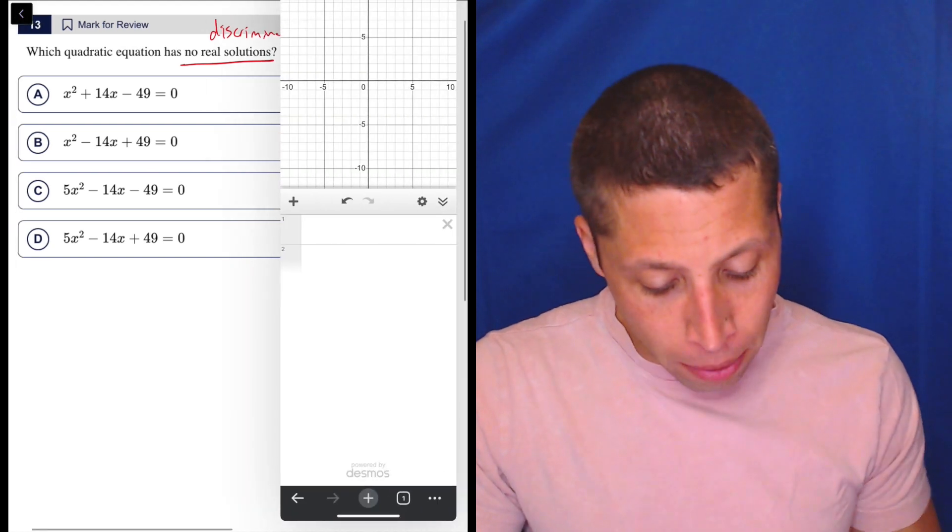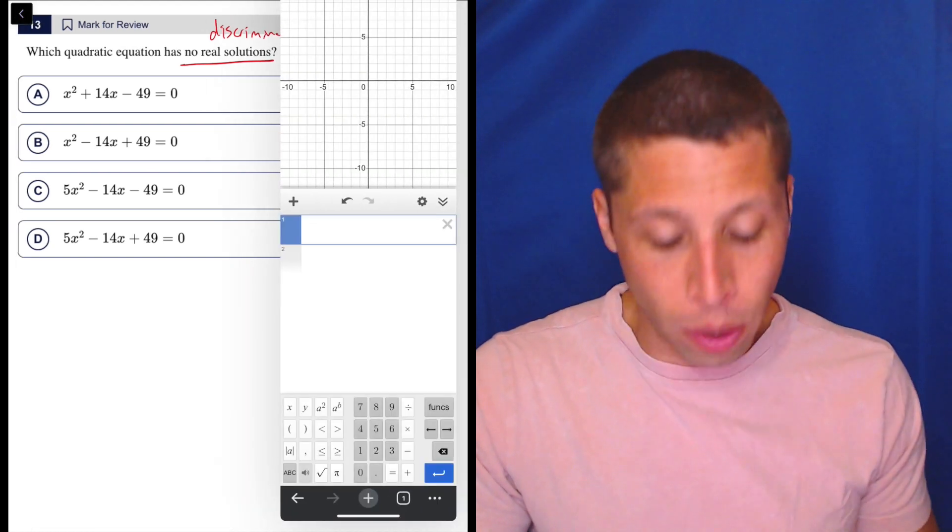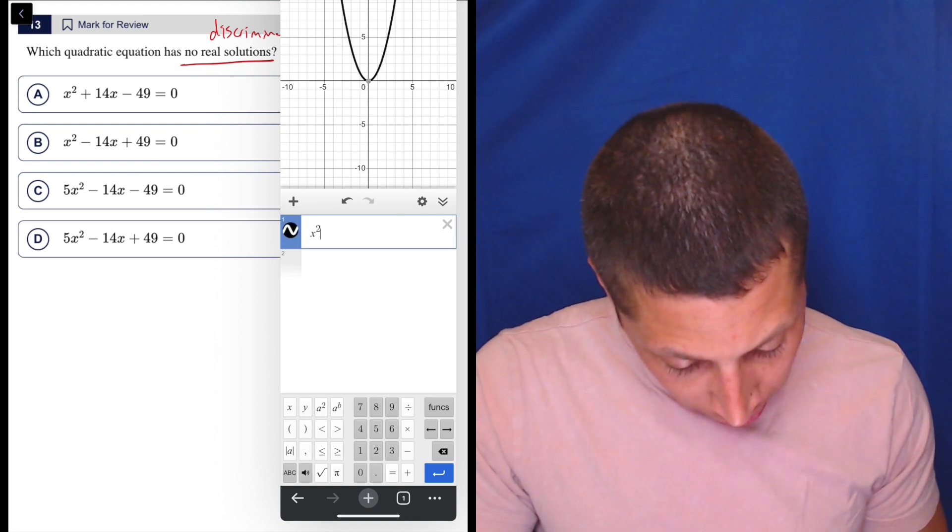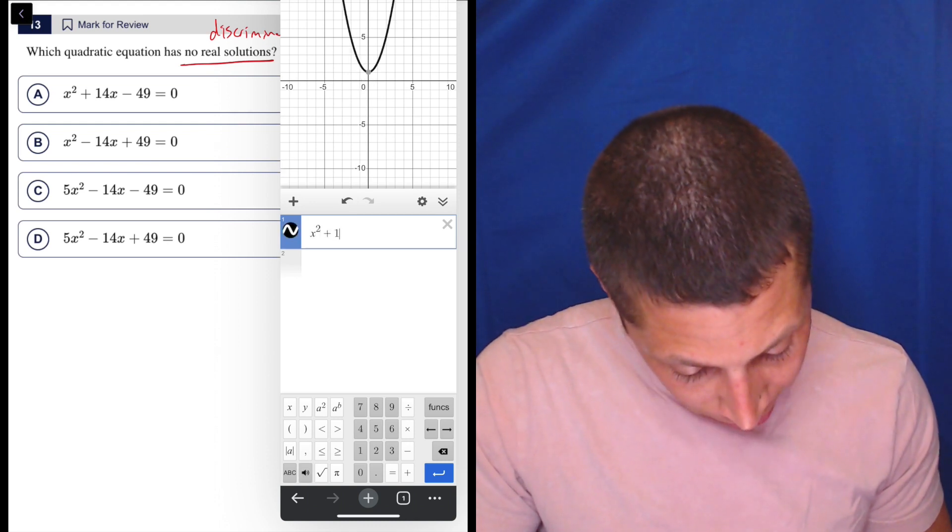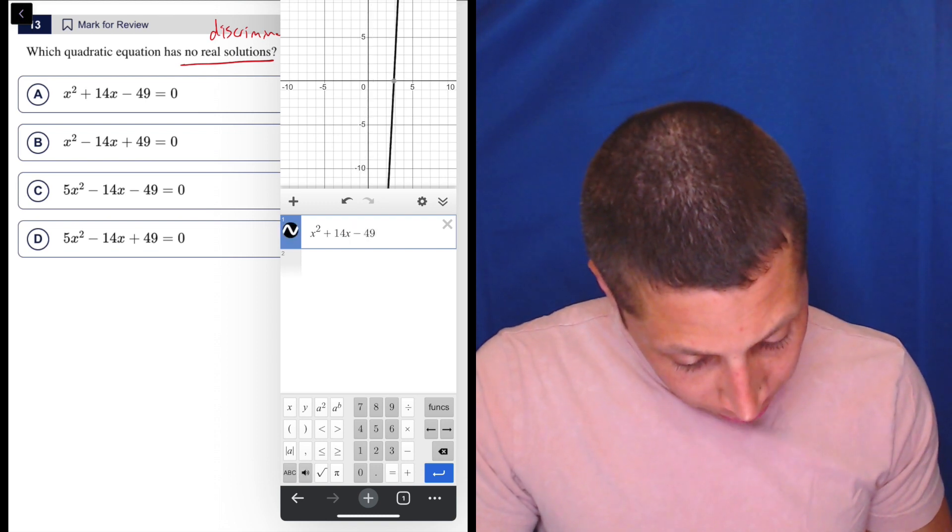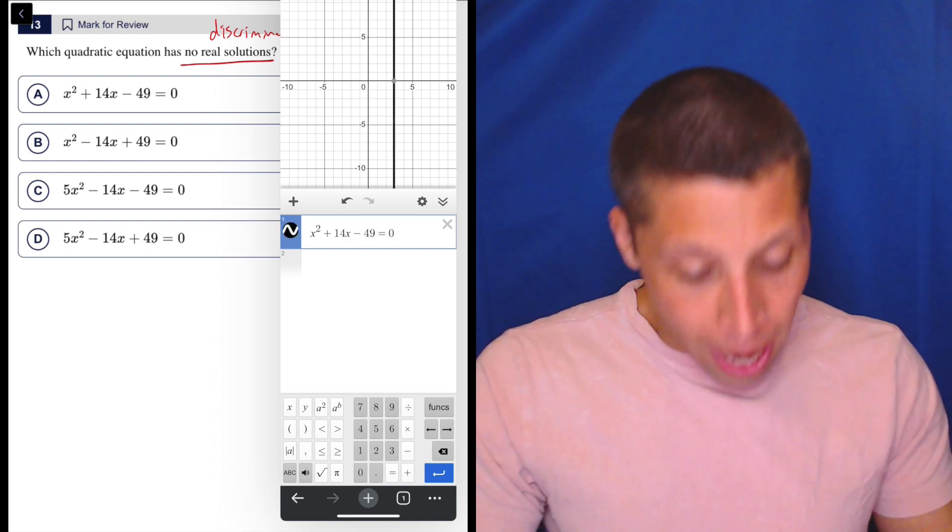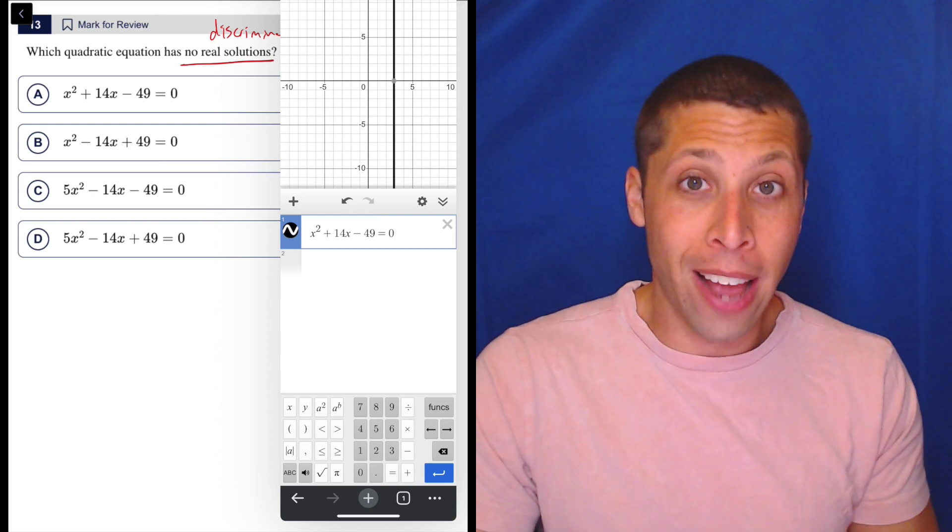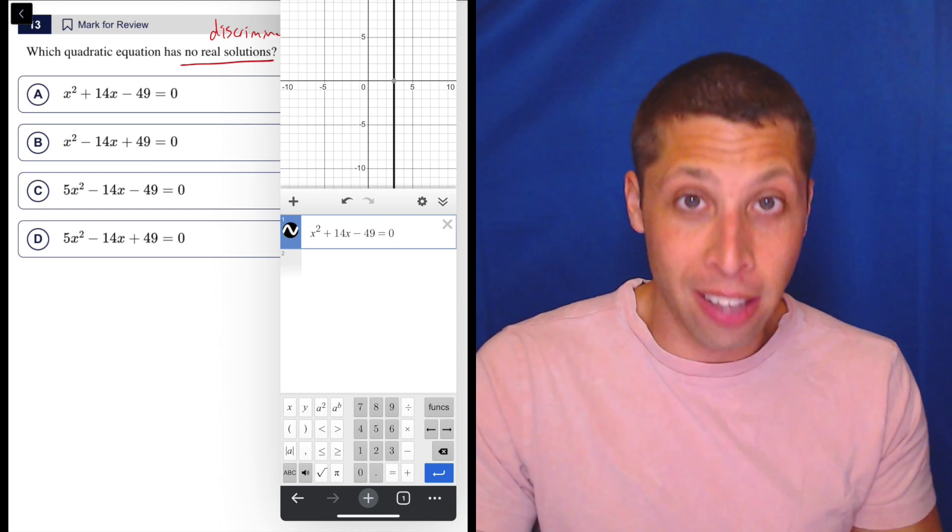I would type these equations, but I would do it in a slightly different way than the way they're presented. So if I do x squared plus 14x minus 49 equals zero, I get a straight vertical line, because what it's giving me is the number of solutions.